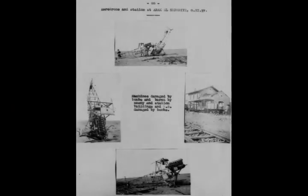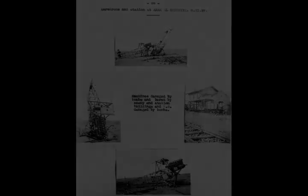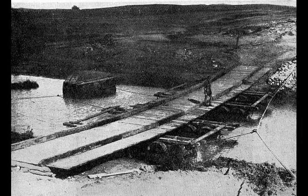The Battle of Mughar Ridge, officially known by the British as the Action of El Mughar, took place on 13 November 1917 during the pursuit phase of the Southern Palestine Offensive of the Sinai and Palestine campaign in the First World War. Fighting between the advancing Egyptian Expeditionary Force and the retreating Yildirim Army Group occurred after the Battle of Beersheba and the Third Battle of Gaza.